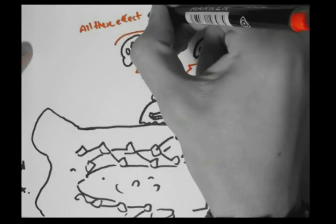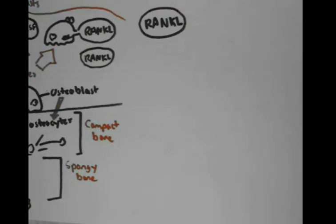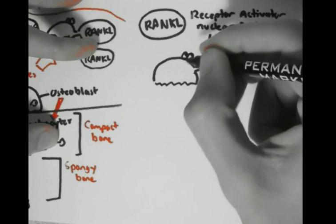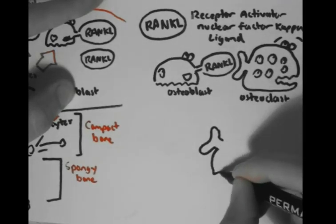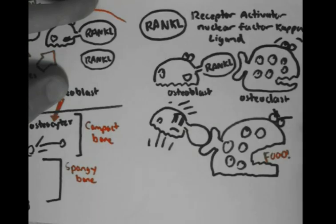Rank ligand stands for receptor activator of nuclear factor kappa ligand. When rank ligand binds to the rank receptor on osteoclasts, it increases osteoclastic activity — meaning less bone and more minerals being released from the bone.